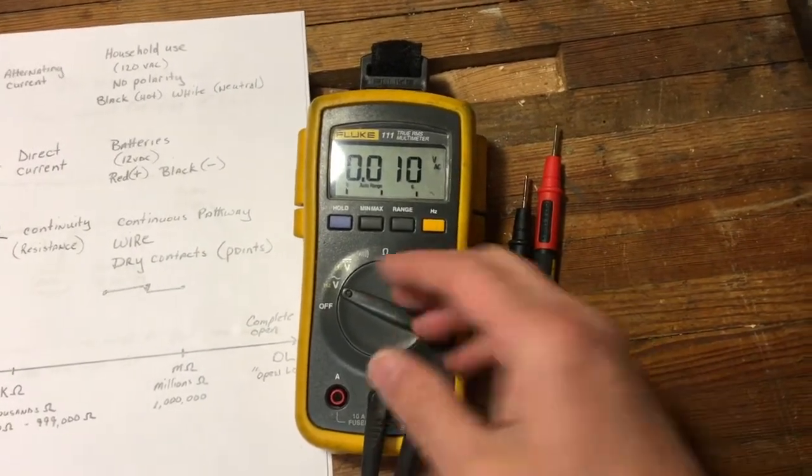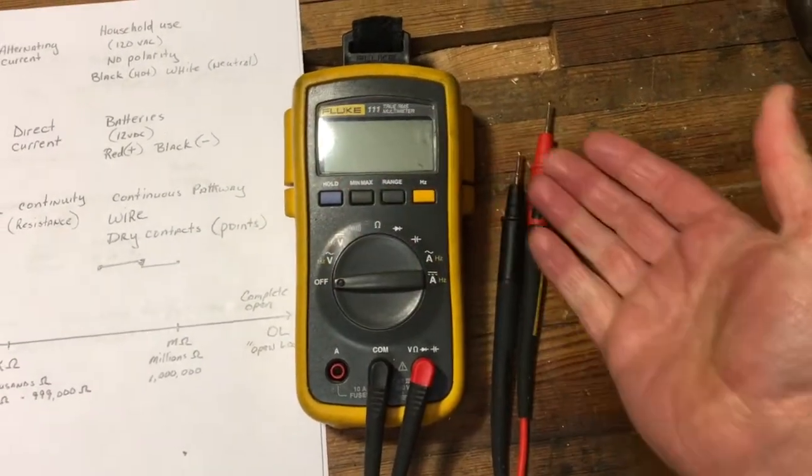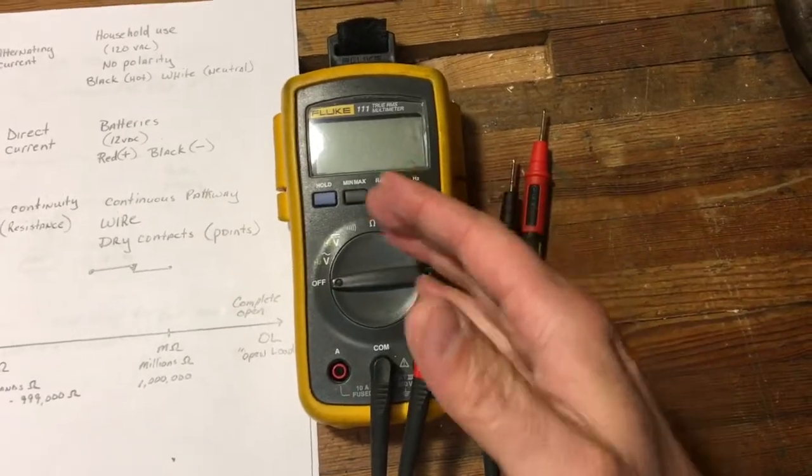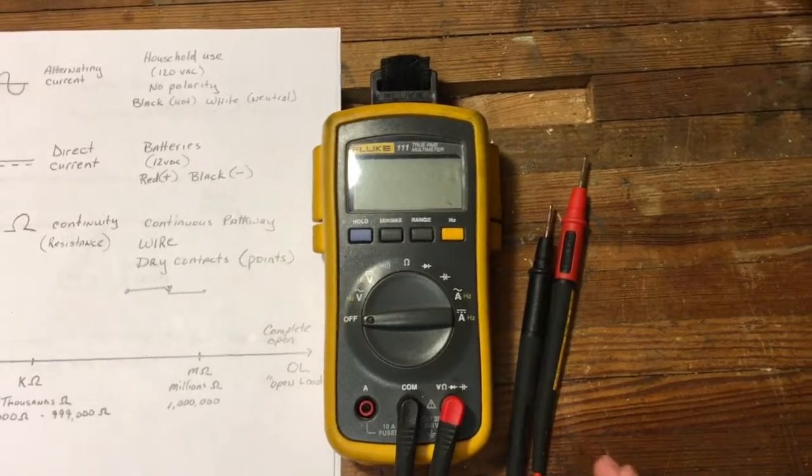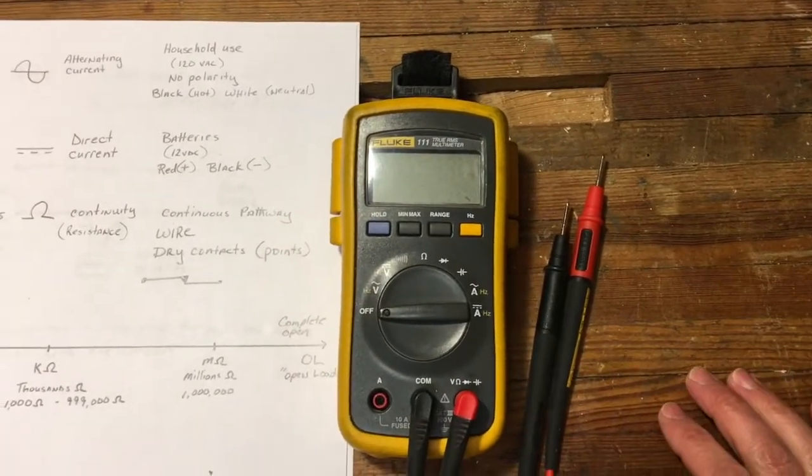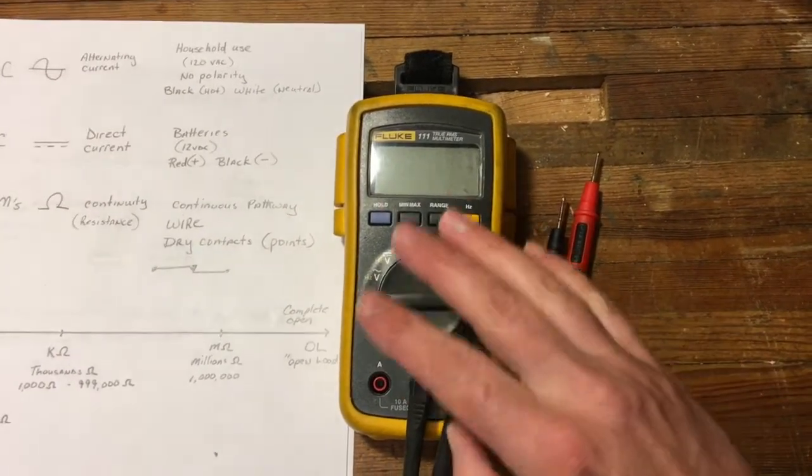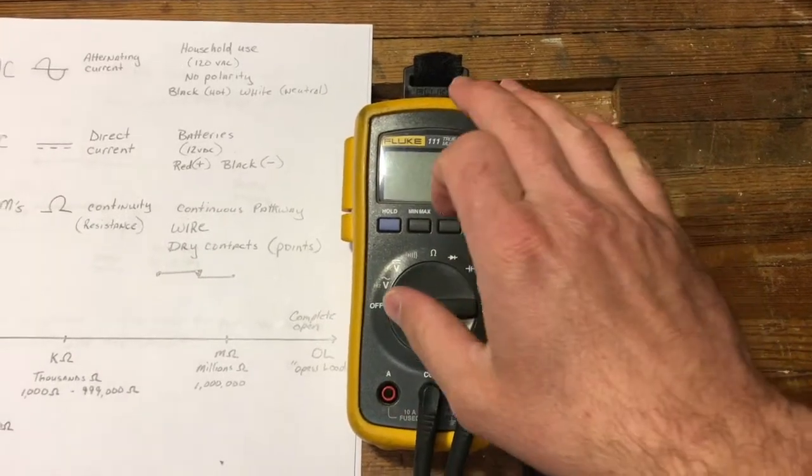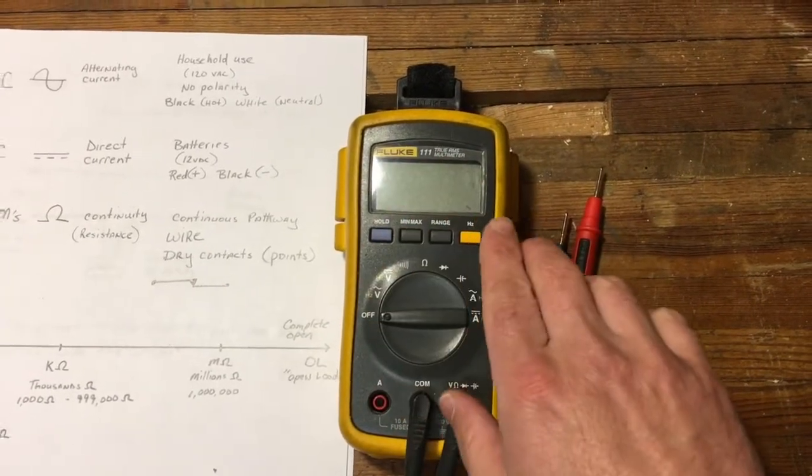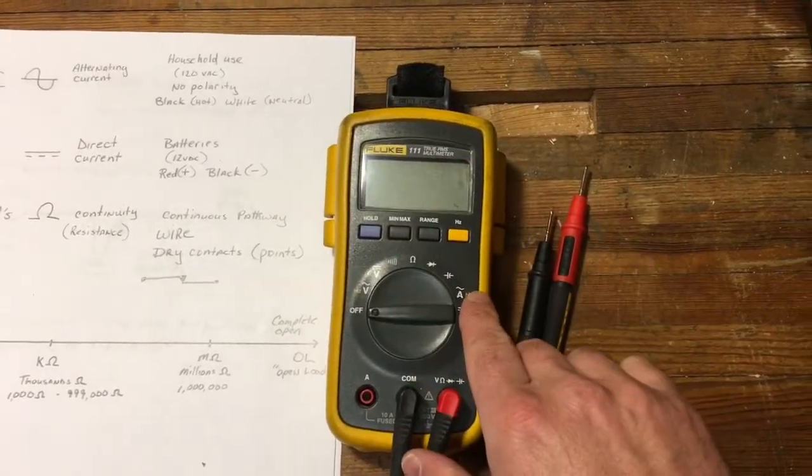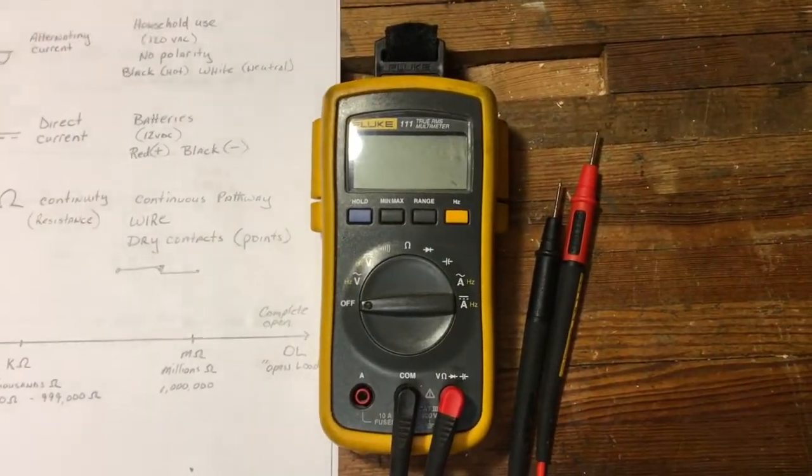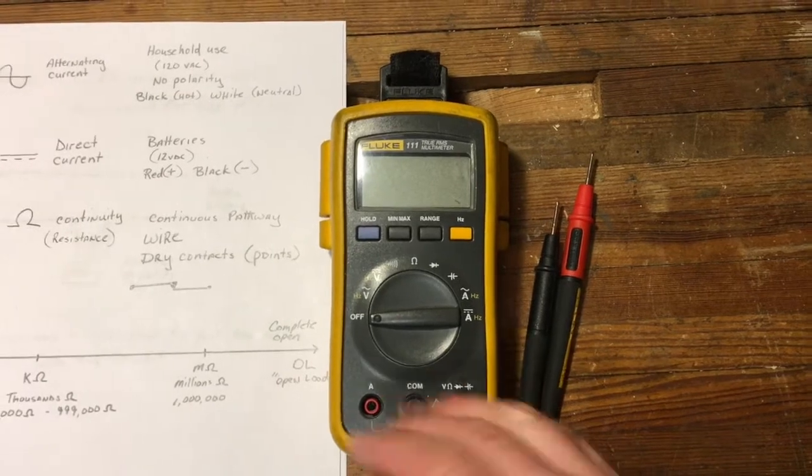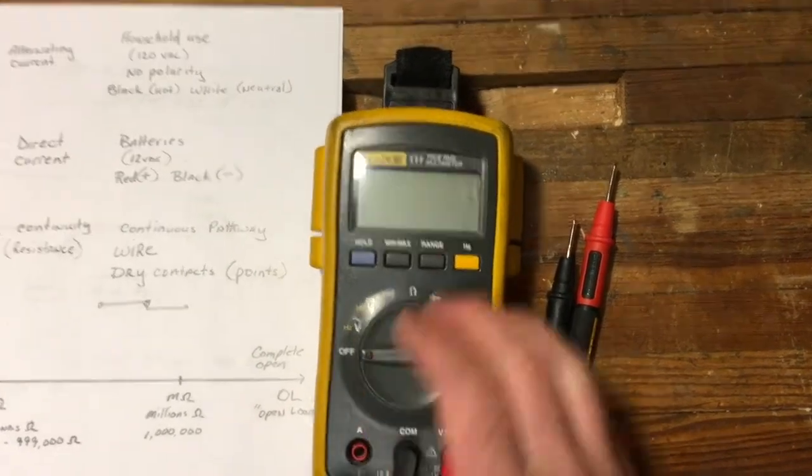There's also the older style with the needle, called analog meters. They work exactly the same - the information is the same, they'll tell you everything the same, except there's a needle and you have to understand the different charts on the display and what they mean, how they correspond, and if you're using it right.